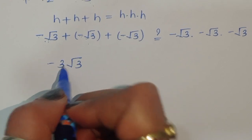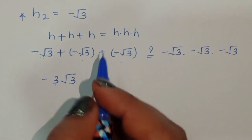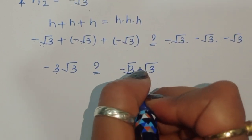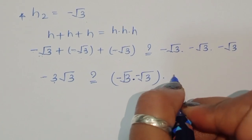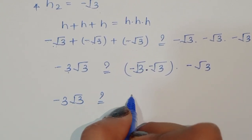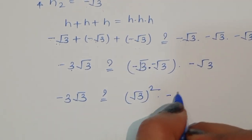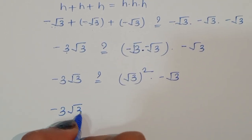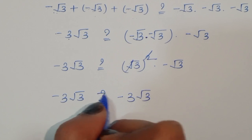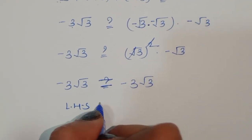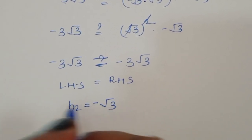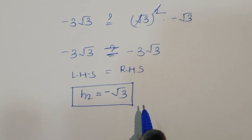On the right side, negative square root of 3 times negative square root of 3 times negative square root of 3: the first two multiply to give positive 3, then times negative square root of 3 gives negative 3 square root of 3. So LHS equals RHS, confirming h equals negative square root of 3 is a correct solution.